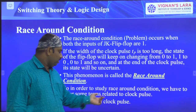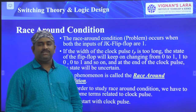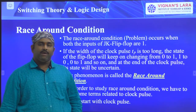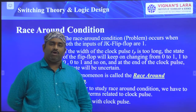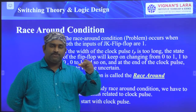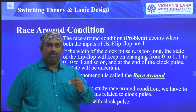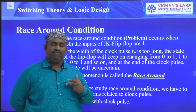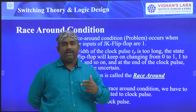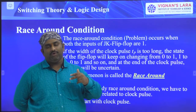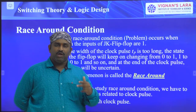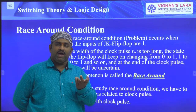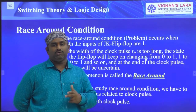In order to study the race around condition, we have to understand terms related to the clock pulse. Generally, clock has two types of signals: the first one is level-triggered and the second one is edge-triggered. In level-triggered clock signals, logic zero is the completely off state and logic one is the completely on state. Whenever logic one is available for the JK flip-flop, the output is continuously toggling from zero to one and one to zero, because whenever J equals one and K equals one, the output is the complemented form of the previous state.